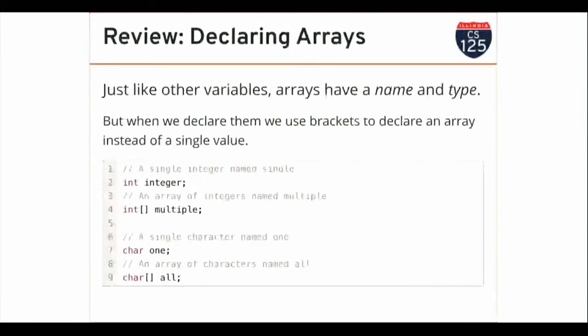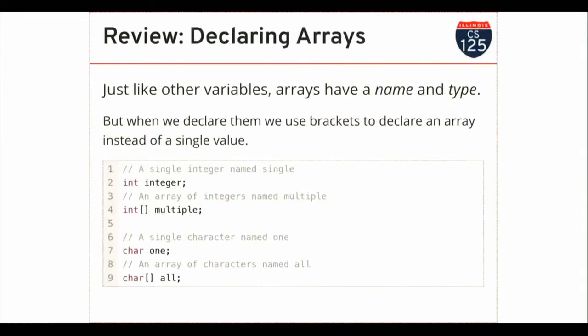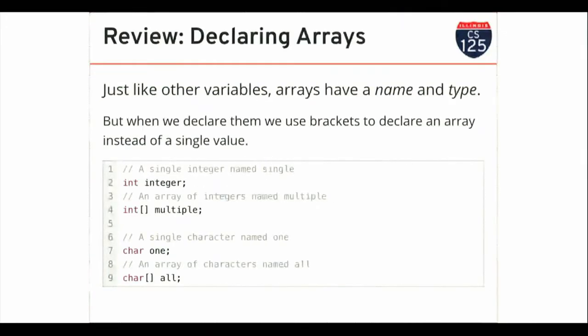Java has syntax that allows me to declare that I'm going to work with data stored in an array. For a single integer value, that's how I declare it on line two. If I want to declare an array — to work with multiple values — I use this bracket notation. On line four, I'm telling Java that the variable 'multiple' is going to store not just one but multiple values of type integer. Same thing with characters: my variable 'one' stores one character, while 'all' stores an array of characters.